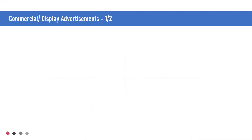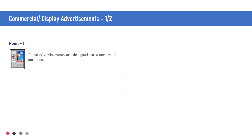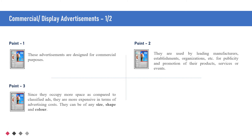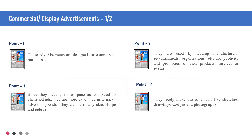Now let us look at commercial or display advertisements in detail. These advertisements are designed for commercial purposes. They are used by leading manufacturers, establishments, organizations, etc., for publicity and promotion of their products, services or events. Since they occupy more space compared to classified advertisements, they are more expensive in terms of advertising costs. They can be of any size, shape and color. They freely make use of visuals like sketches, drawings, designs and photographs.